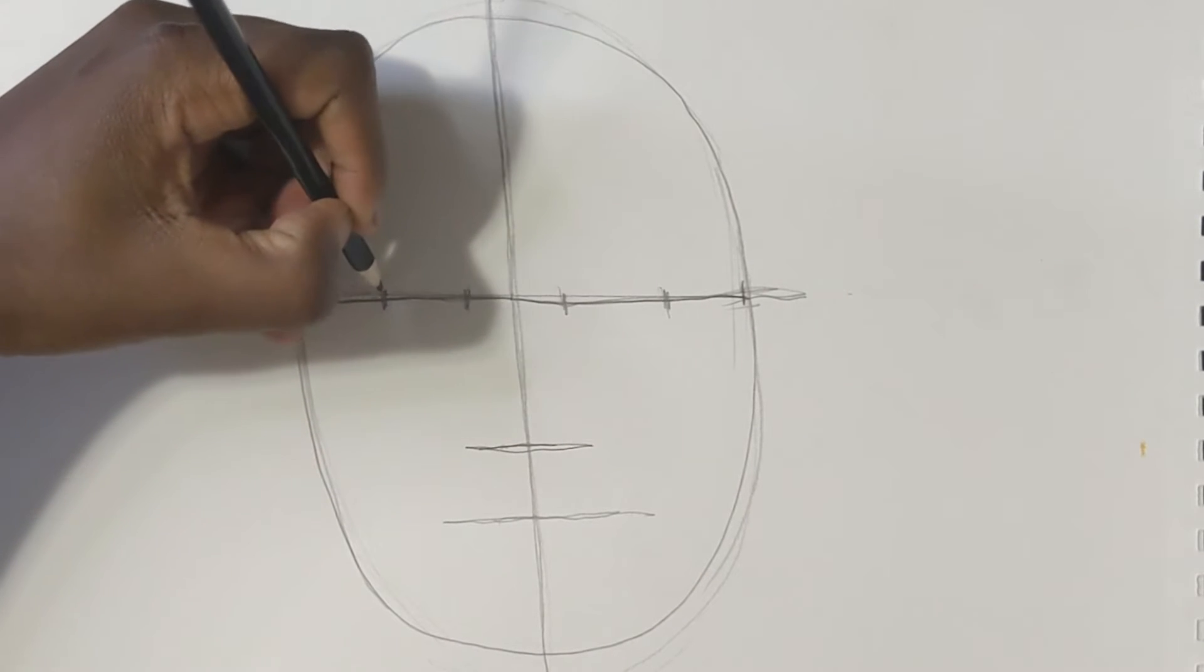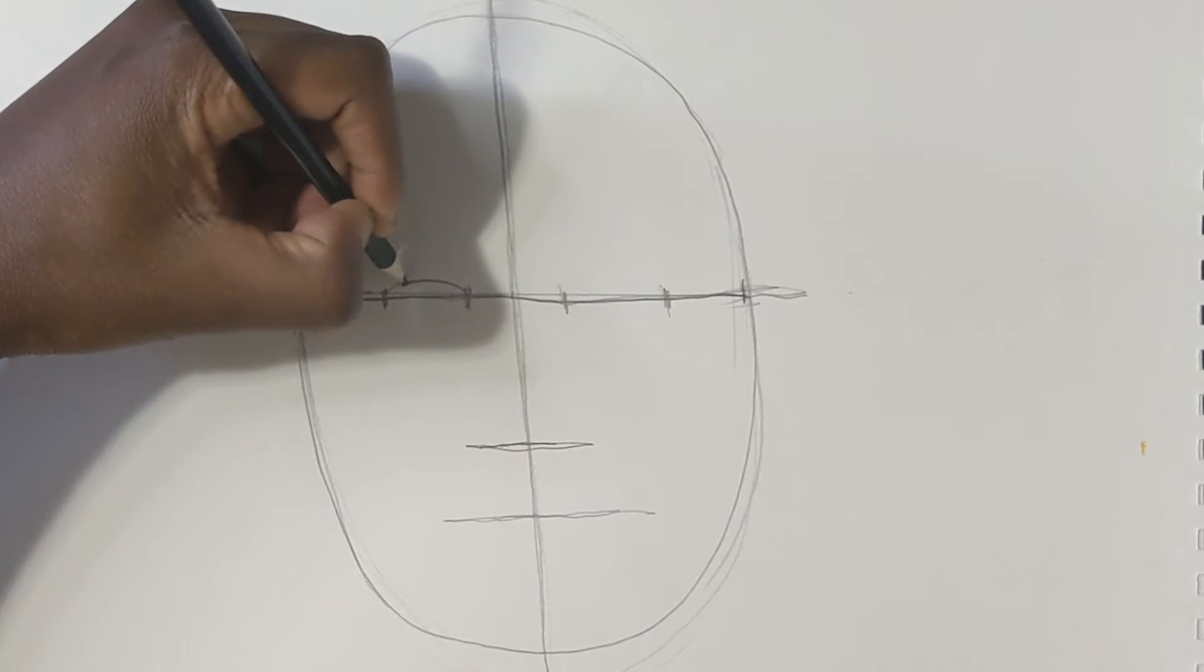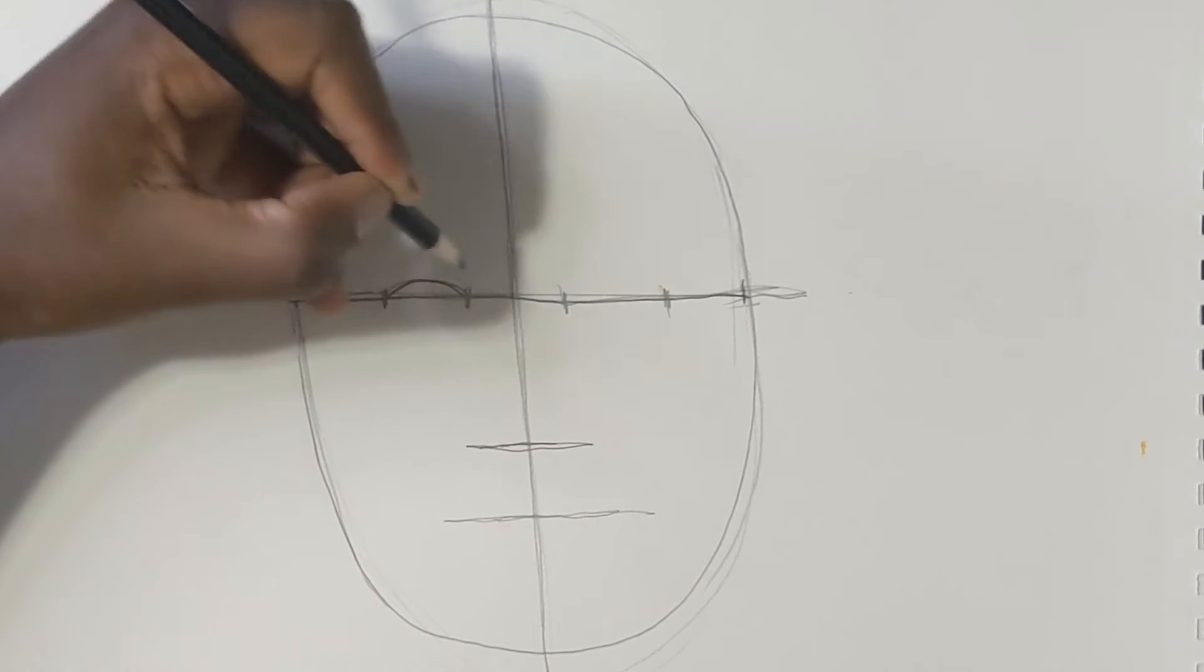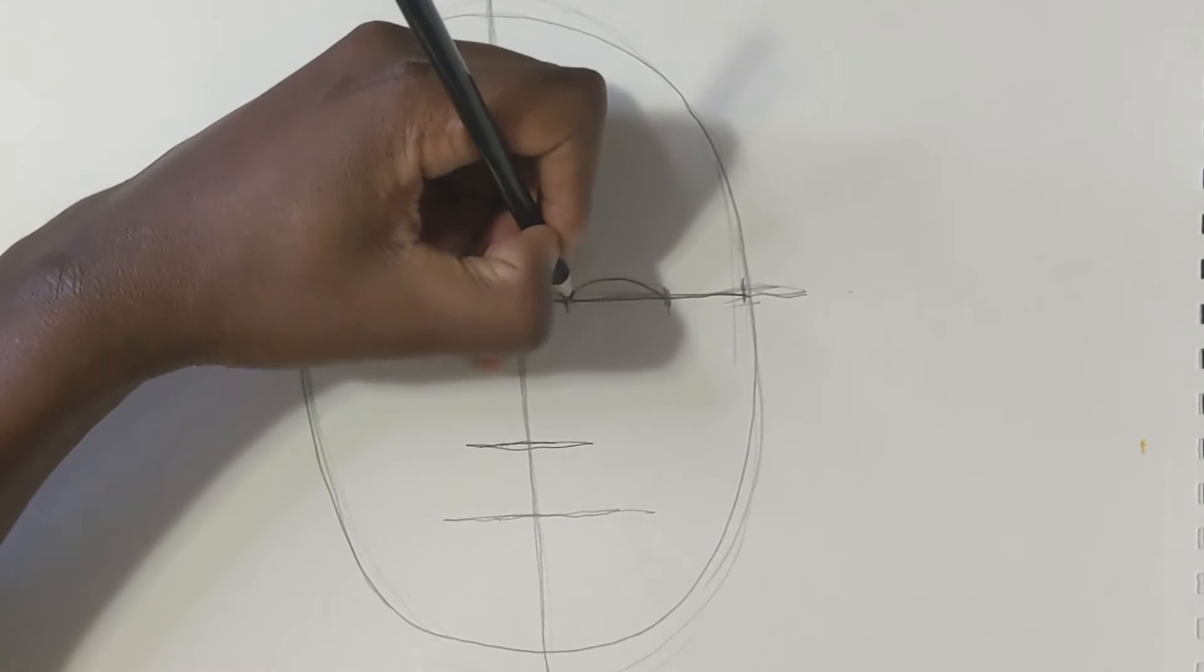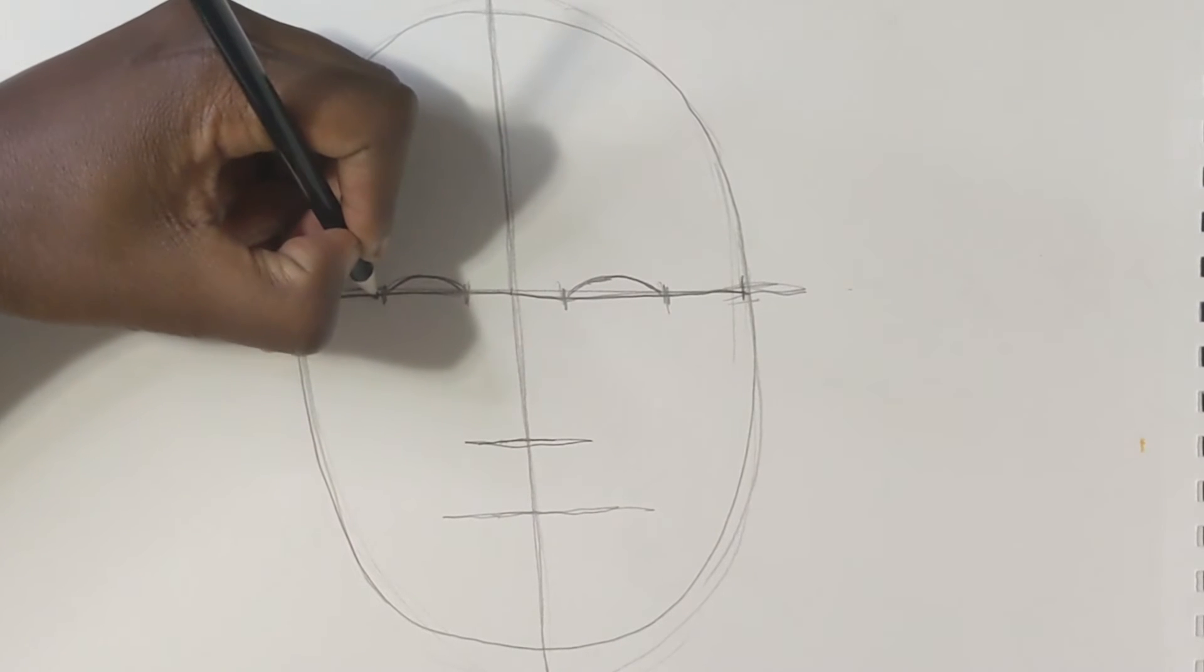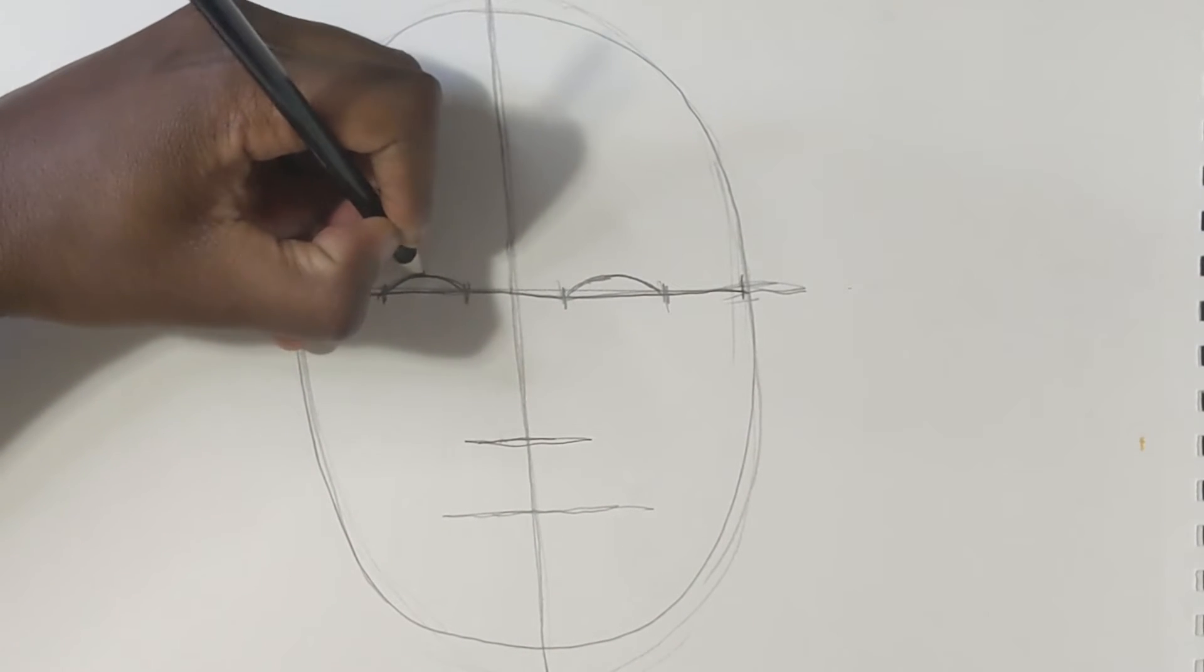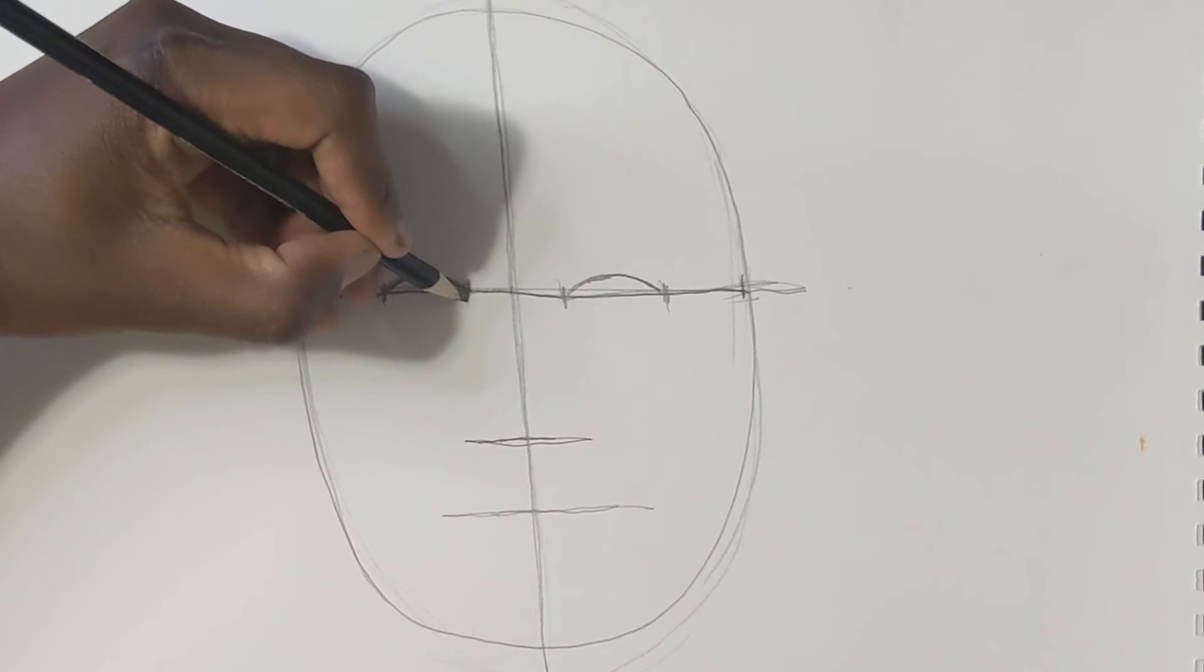The second one out, we're going to make an arch line here and an arch line here - that's going to be the top of my eye. Then we're going to do an arch line under the bottom.